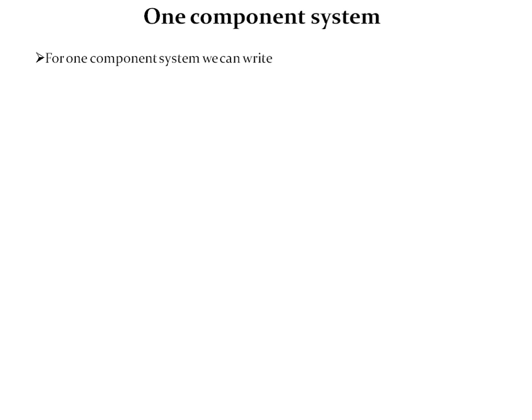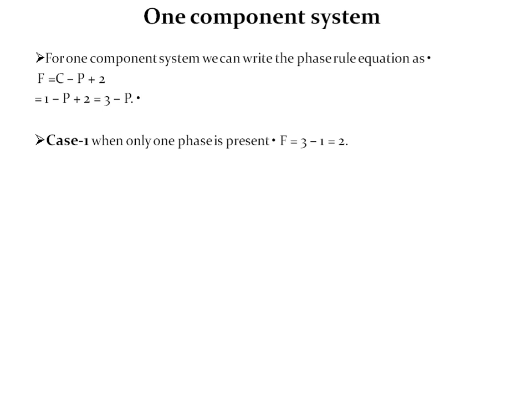We will move towards the one-component system of water. For a one-component system, we can write the phase rule as F = C − P + 2, and instead of C we put one because it is the example of a one-component system. There are different cases. As you are changing the phase of your system, your degrees of freedom vary because of this phase change.